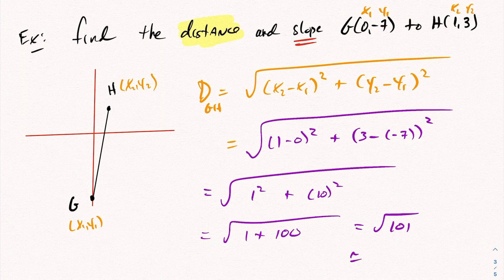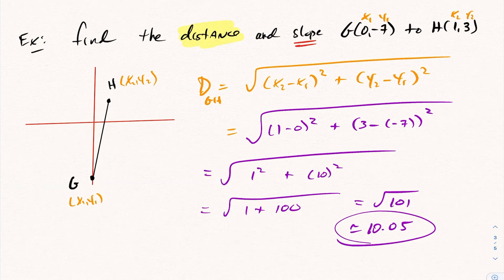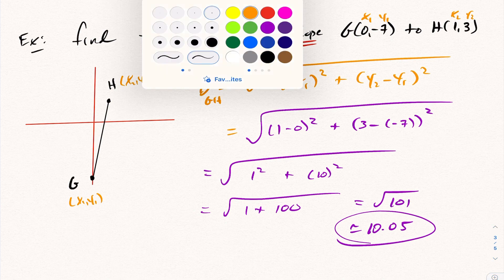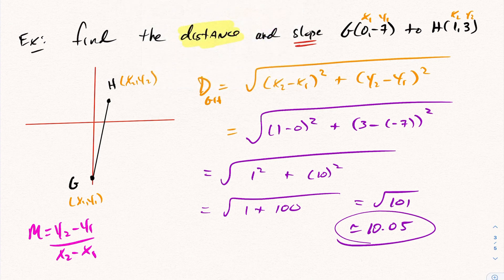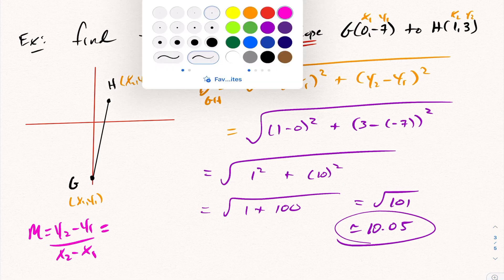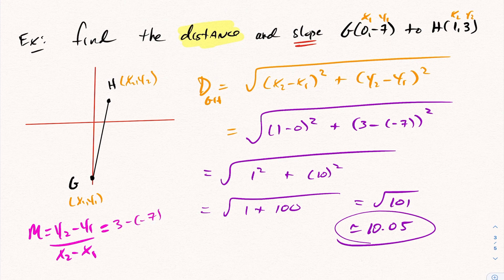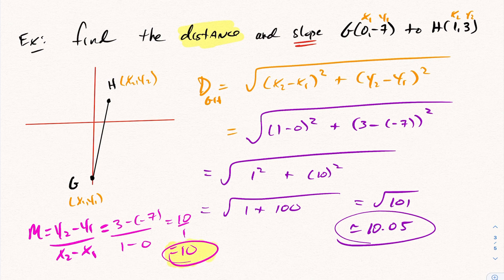Putting √101 into a calculator gives approximately 10.05 units — that's the distance from G to H. Now for the slope: from grade 9, slope equals (Y2 − Y1) / (X2 − X1). Using our labeled points, slope = (3 − (−7)) / (1 − 0) = 10/1 = 10. This makes sense looking at the graph: the line is increasing and steep, so a large positive slope is expected.